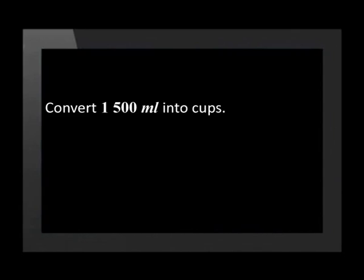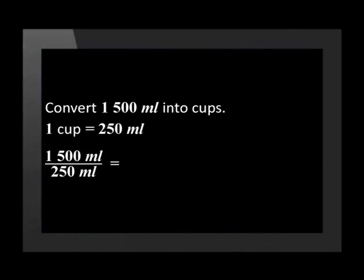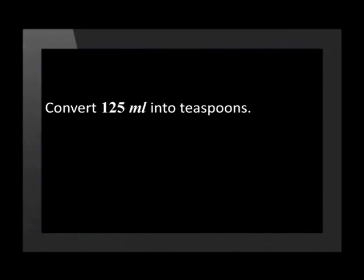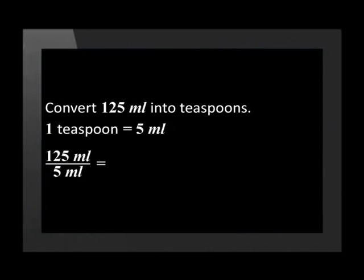Let's do some examples. Convert 1500 millilitres into cups. We know that one cup contains 250 millilitres. This means that we divide 1500 millilitres by 250 millilitres. The answer is 6 cups. As always, you have to write down the unit of your answer. For the next one, convert 125 millilitres into teaspoons. Remember, one teaspoon equals 5 millilitres. We divide 125 millilitres by 5 millilitres. The answer is 25 teaspoons.